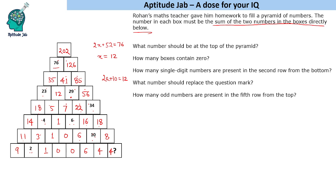What number should be at the top of the pyramid? It is 202. How many boxes contain 0? So we have 1, 2, and 3 zeros in this pyramid. How many single digit numbers are present in the second row from the bottom? Single digit numbers here, so 1, 2, 3, 4, and 5. So we have 5 such numbers.